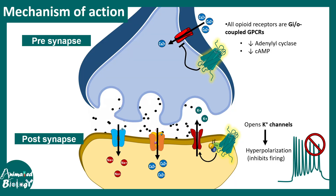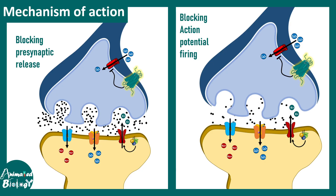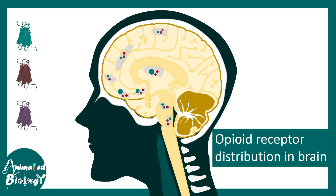So we understood that there are two different mechanisms. One operates at the pre-synaptic level: due to reduction of calcium levels, the synaptic release of neurotransmitter is hampered. The other operates at the post-synaptic level: changes in membrane potential make the neuron less likely to fire an action potential.